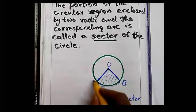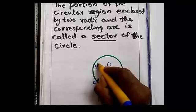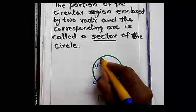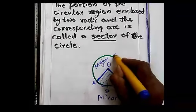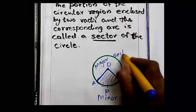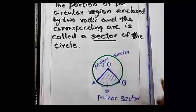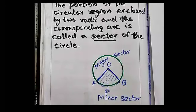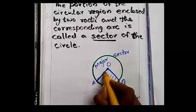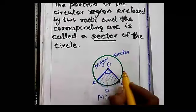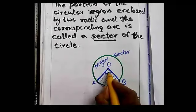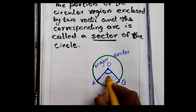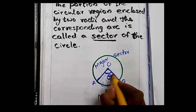Then the other portion is the major sector. So here we have the minor sector and the major sector. Now, suppose the two radii make an angle at the center — that angle is theta.